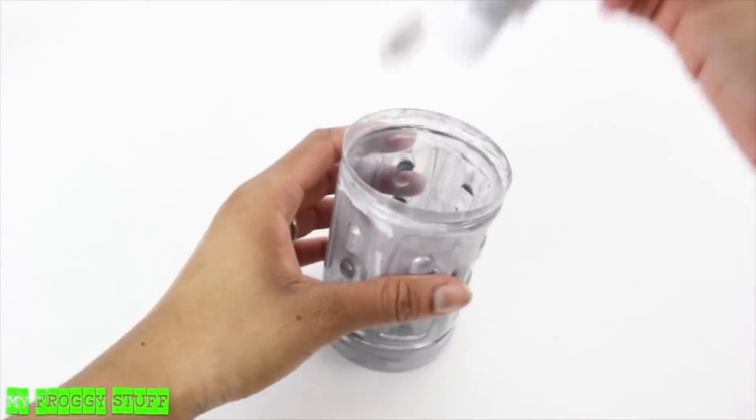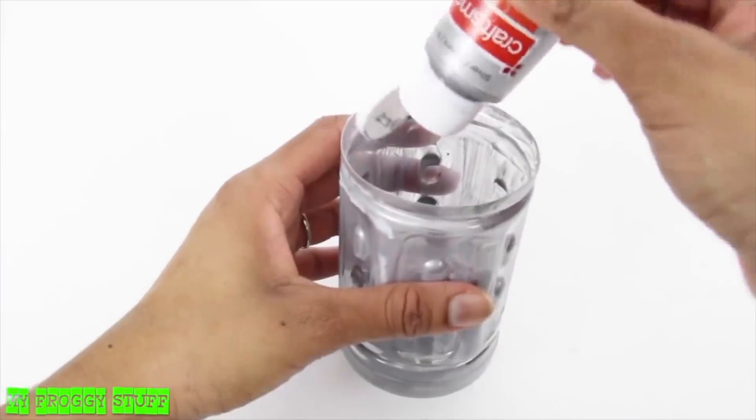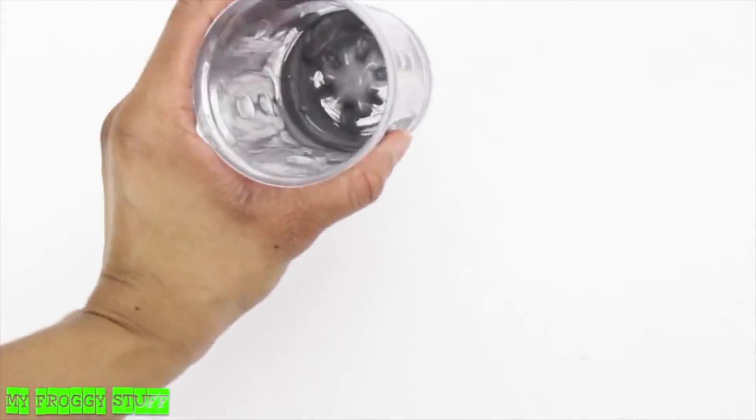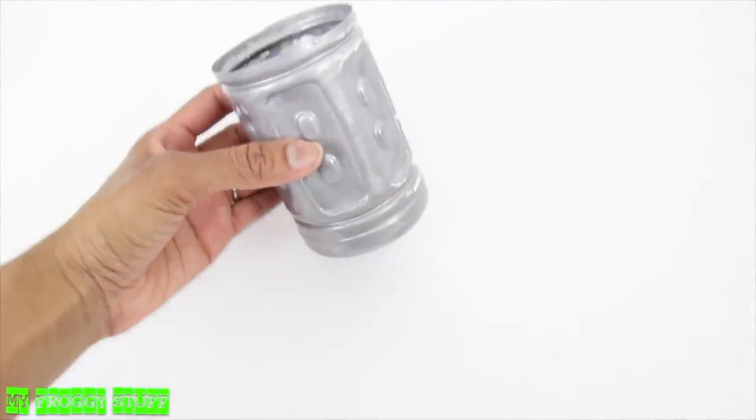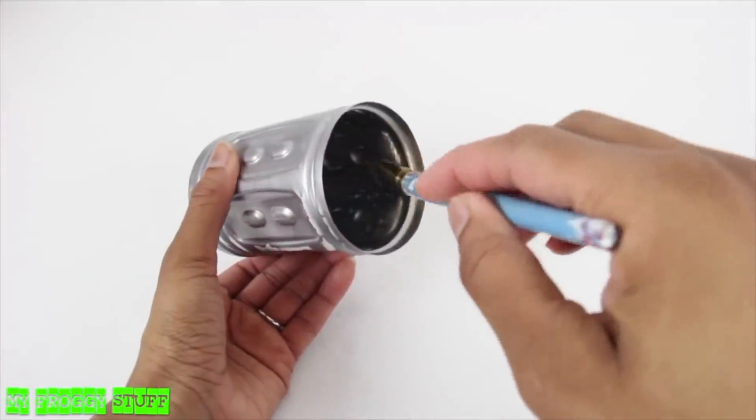For the areas that are hard to reach, I found it a little easier to pour the paint in. And then just move the container. Allow it to dry between coats. Then continue painting.